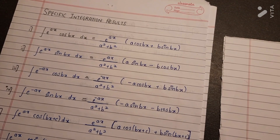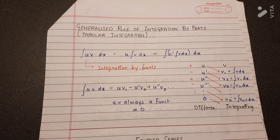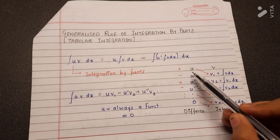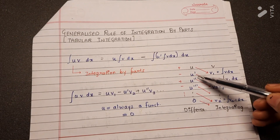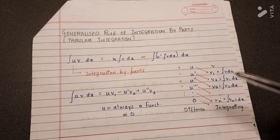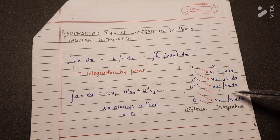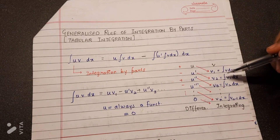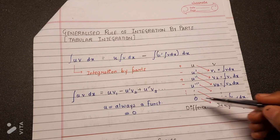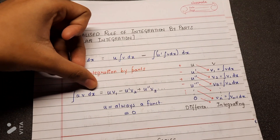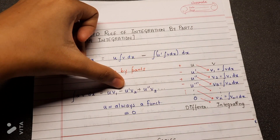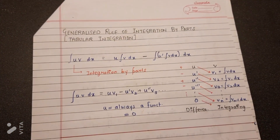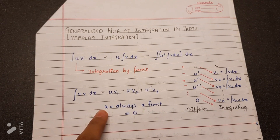Let us see what is the generalized rule of integration by parts, that is tabular integration. In tabular integration, we take the first function as u and the other as v. Downwards, we go on differentiating u until it becomes zero, whereas for v we go on integrating. We then put alternate plus and minus signs and cross multiply horizontally and add up. The equation is: ∫uv dx = uv₁ − u′v₂ + u″v₃ and so on. It is always necessary to take a function that will end up differentiating to zero.